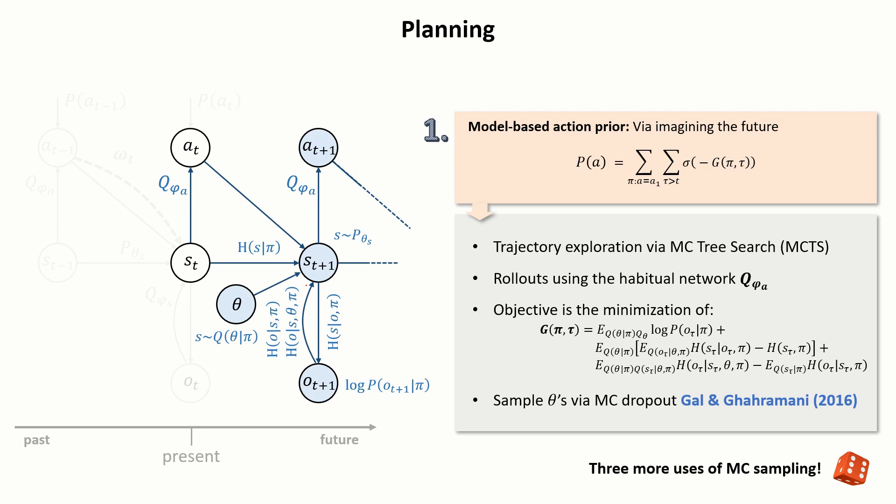Finally, during planning, the parameters of the network are also viewed as random variables and sampled based on the MC dropout technique.